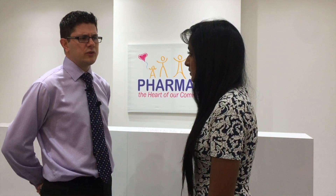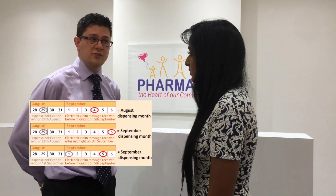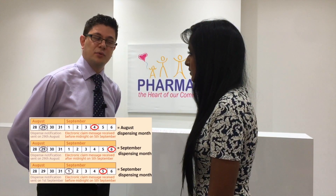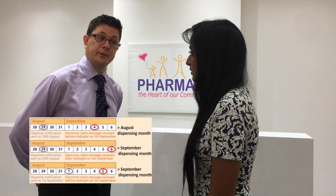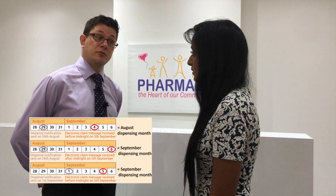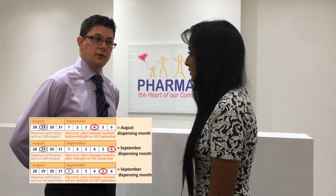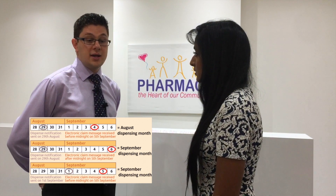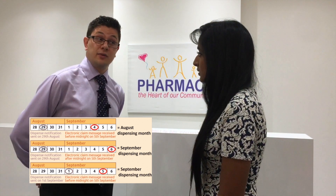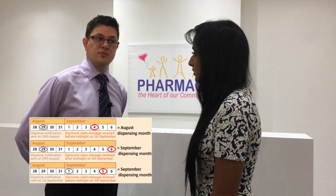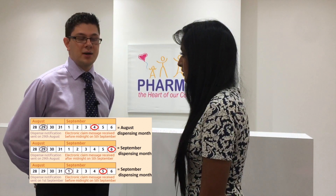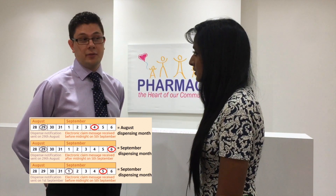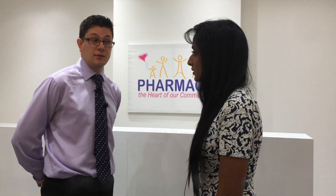If you sent your dispense message by the end of August, then you would need to send the claim message by the 5th of September for that prescription to count as an August dispensing month prescription. If the claim message was sent just one day later on the 6th of September, that is outside the five day payment window and that would push the whole prescription into the following month — into the September dispensing month.